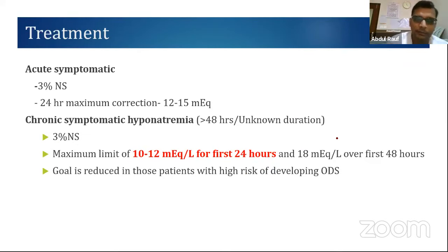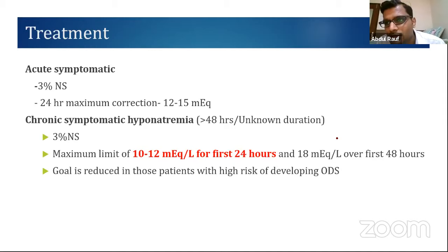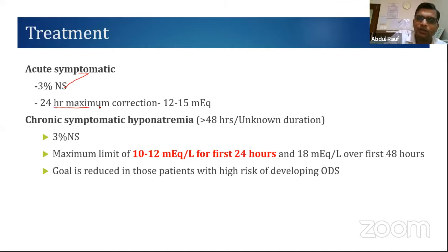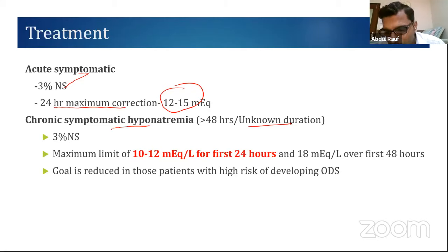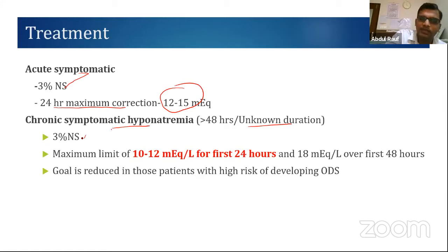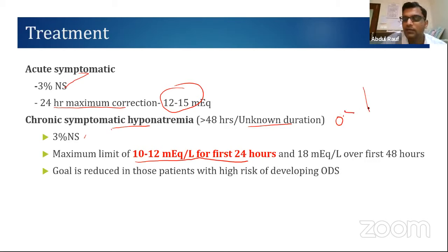For acute symptomatic hyponatremia (known to have occurred within 48 hours): give 3% NS bolus if symptomatic, and the maximum 24-hour correction is 12–15 mEq. For chronic symptomatic hyponatremia (or unknown duration), give 3% NS bolus if symptomatic and maximum correction is 10–12 mEq in 24 hours — that is 0.5 mEq/hour maximum. For example, a meningitis patient with 3 days of fever and sodium of 128 should be assumed to have chronic hyponatremia.